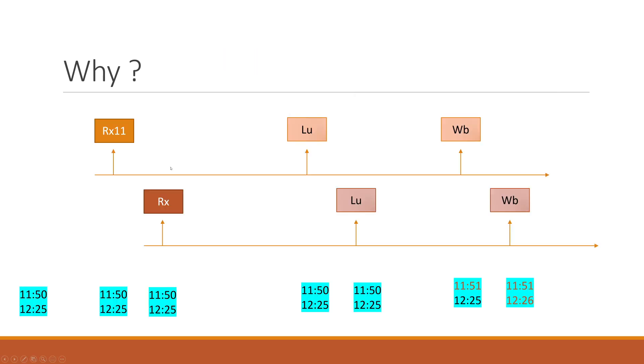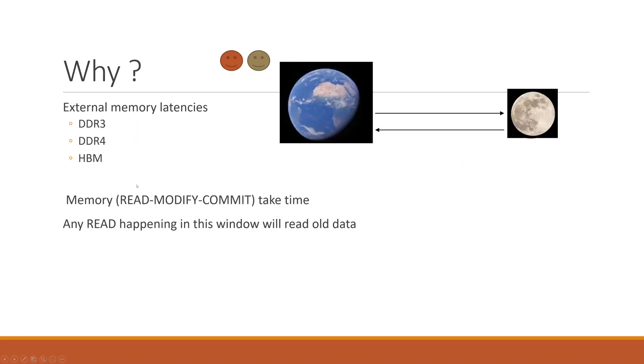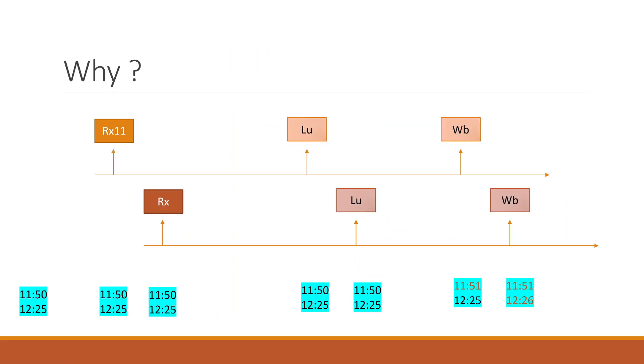If we look at a realistic example from an FPGA perspective, I show here a very simple case where two transactions happen. Let's go back to this analogy and think about what if this person in red was not wanting Lord of the Rings but some other book like Harry Potter. In that case there is no conflict. The first transaction is trying to read from address 11 and the second one is trying to read from address 12.